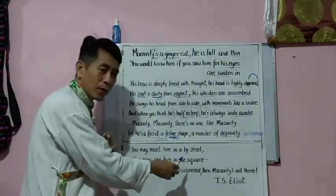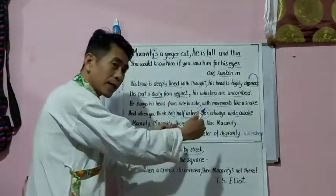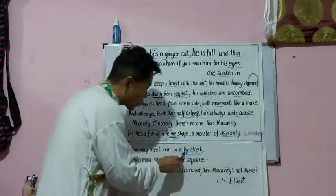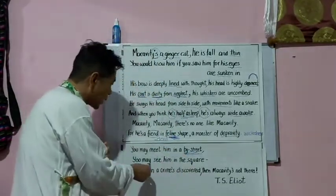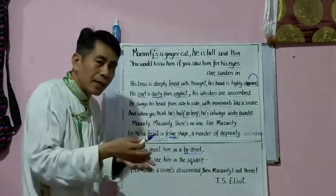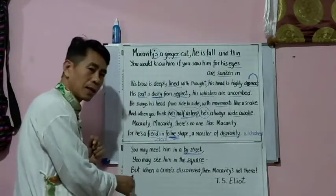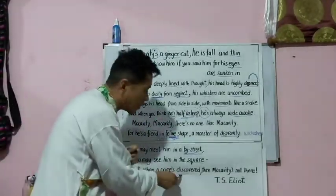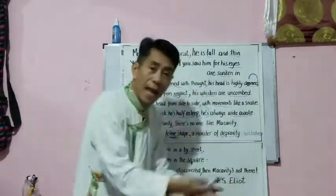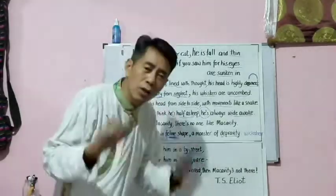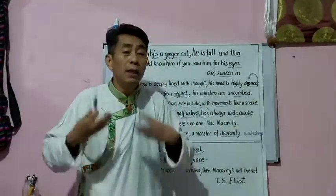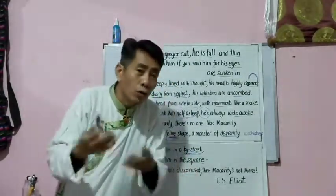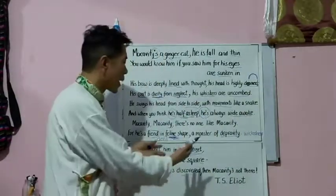You may meet him in a by-street — a smaller, less prominent street — or you may see him in the square, the main market area. But when a crime is discovered and you look for Macavity, Macavity is not there. He creates lots of problems, but when the policemen and the Flying Squad come to investigate and reach the crime scene, when they look for the main wrongdoer, Macavity was not there. That's why Macavity is a mystery cat.